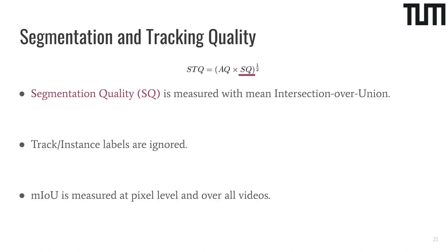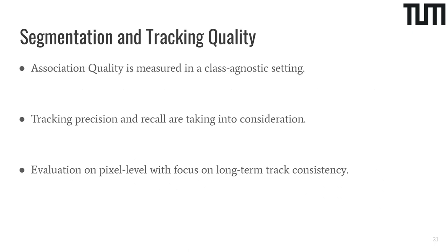For measuring segmentation, we can resort to the standard semantic segmentation metric, which is mean intersection over union (mIoU). For this metric, track or instance IDs are simply ignored and we consider every pixel of every sequence to compute the final score. The association quality is also measured on the pixel level, where only tracking IDs are considered, leading to a class-agnostic measure. Inspired by the HOTA metric, the AQ metric makes sure to also take tracking precision and tracking recall into consideration, as both are important in real-world applications. On top of this, AQ is defined to encourage long-term track consistency. For an in-depth discussion, we refer to the corresponding publication.